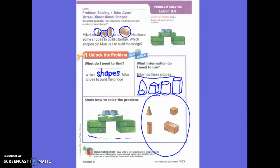How can you check that your bridge is just like the one in the picture? By looking at the steps. We can look at the steps. So can I check each shape? Did I circle rectangular prism? Yes.